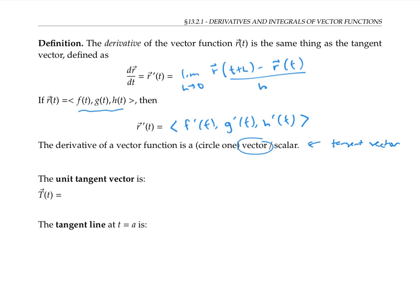As with any vector, we can normalize the tangent vector to make it have length one. That's called the unit tangent vector. It's denoted with a capital T, and we get it by taking r prime of t and dividing by the magnitude of r prime of t.